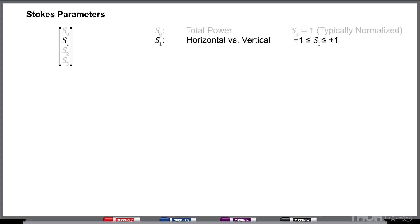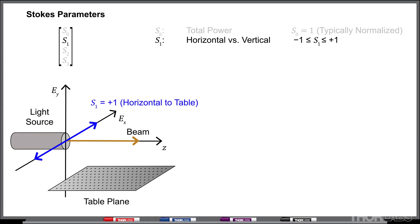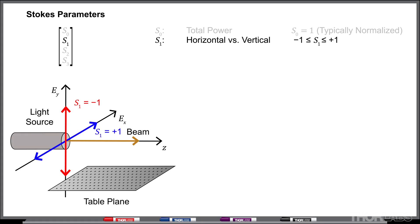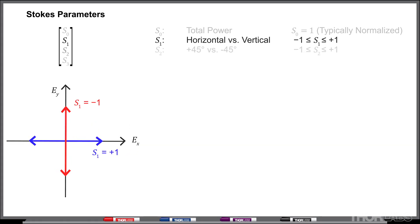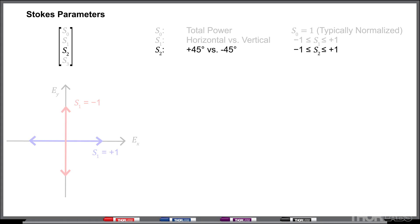The second parameter, S1, describes how much more horizontally polarized the light is compared to vertically polarized. A value of positive 1 would indicate that the beam is exactly horizontally polarized, and a value of negative 1 would indicate that we have an exactly vertically polarized beam. The third parameter, written as S2, describes how much more polarized the light is at an angle of plus 45 degrees to the horizontal, compared to polarized at an angle of negative 45 degrees to the horizontal.